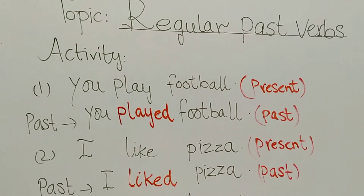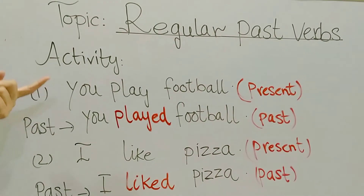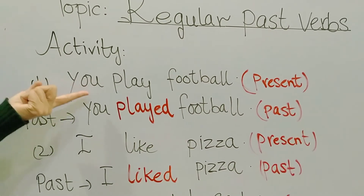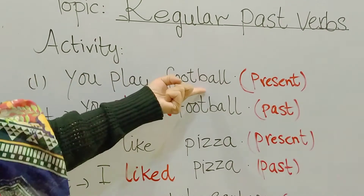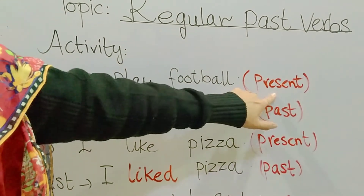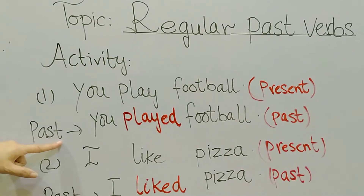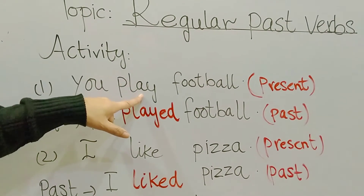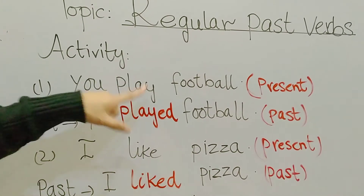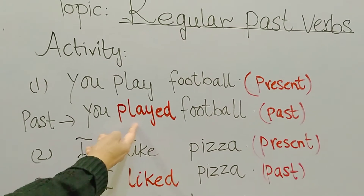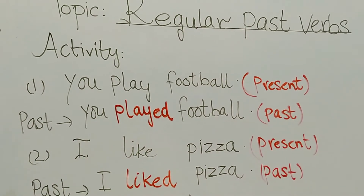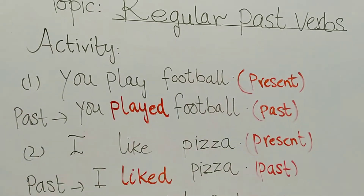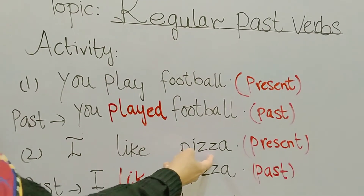In sentence one, you can see: 'You play football' — this is written in present tense. To make it past, I have to change the verb by adding 'ed' at the end of 'play', making it 'played'. This is also called a regular past verb. So the sentence becomes: 'You played football' — written in past tense.